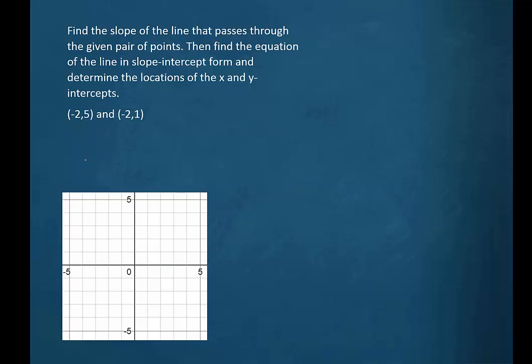Here's another set of ordered pairs: (-2,5) and (-2,1). So if we were to plot those, we'd have this dot minus 2, 5, and this dot minus 2, 1.